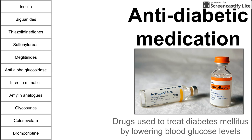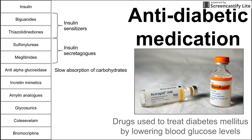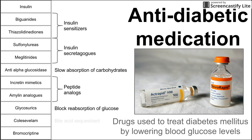Before we begin, we're going to break down the list of drug classes on the left. We have the insulin sensitizers, the insulin secretagogues, the anti-alpha-glucosidases, which allow for slow absorption of carbohydrates. We have peptide analogs that serve a couple of functions. We have the glycosurics, which block reabsorption of glucose in the kidneys. And then we have two grab-bag drugs that are approved for anti-diabetic purposes but have other primary purposes.